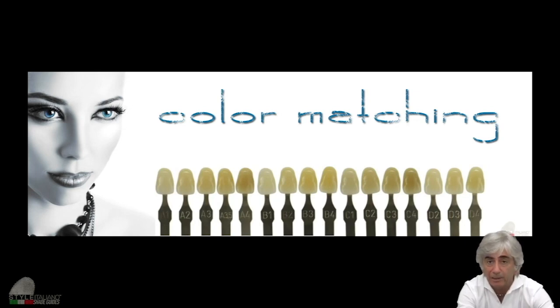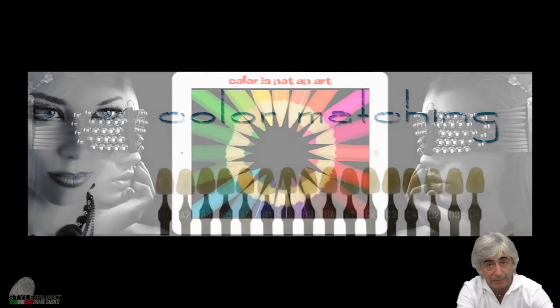You see, this is the Vita shade tabs that we use to check the color with ceramic, but not only with ceramic. A lot of companies don't have inside the composite boxes the references, the shade guide. So they use, okay, this is Vita shade guide. What does it mean? It means it doesn't fit very well.